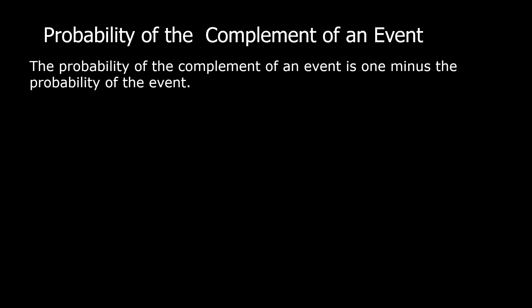Today's topic is probability of the complement of an event. The probability of the complement of an event is 1 minus the probability of the event. In symbols, P of E prime is equal to 1 minus P of E, where P means probability, E prime means complement of the event, and E means the event.